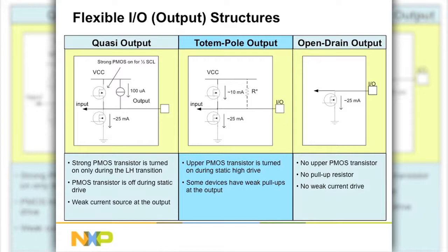Totem pole outputs consist of upper and lower transistors and are ideal for fast switching applications. They have steep rising and falling edge transitions, with each output stage required to source or sink between 10mA to 25mA of current.